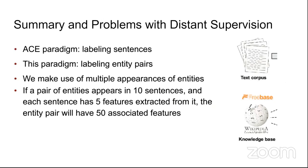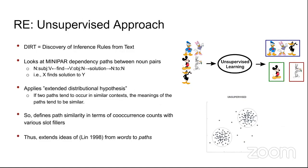Distant supervision does not require a large labeled corpus — from a knowledge base or corpus you can create training data and find new pairs. If a pair of entities appears in 10 sentences and each sentence yields 5 features, the entity pair will have 50 associated features overall, making labeling unseen data much easier.